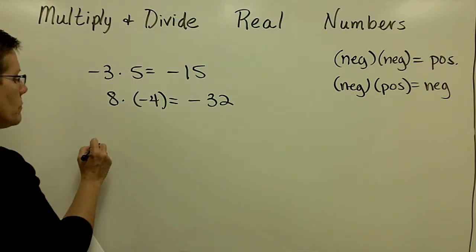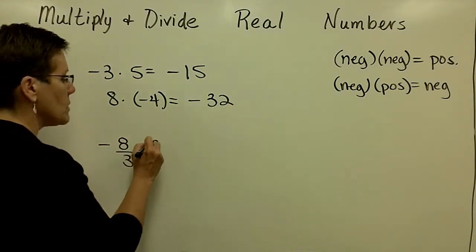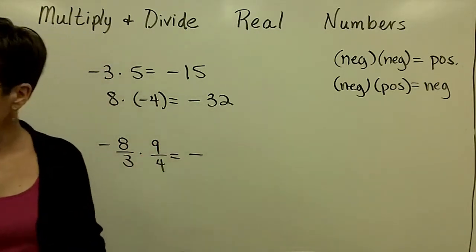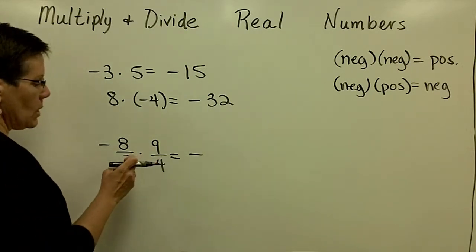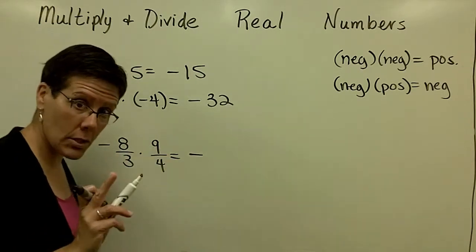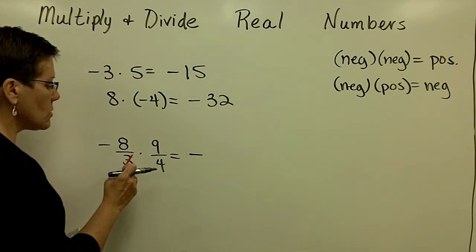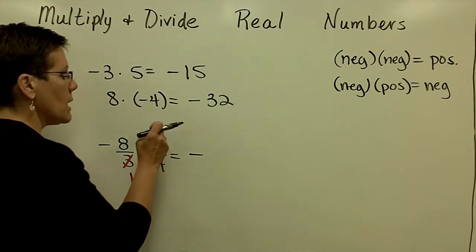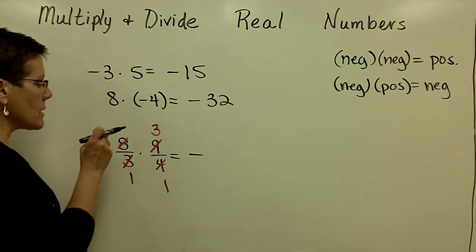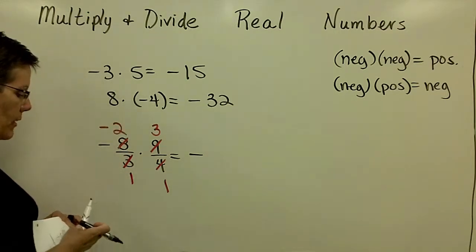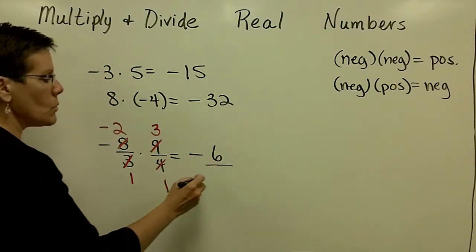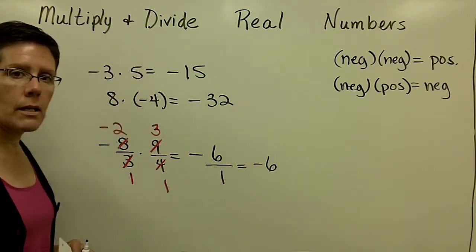Let's take a look at a fraction. Negative 8 thirds times 9 over 4 is a negative times a positive, so that will give me a negative result. Instead of multiplying to get negative 72 over 12 and then reducing, I notice that 3 goes into 3 once and 3 goes into 9 three times, and 4 goes into 4 once and 4 goes into 8 twice. I'll put that sign up there so I don't forget it. My final answer is negative 2 times positive 3, or negative 6. In the denominator, 1 times 1 is 1, so the answer is simply negative 6.